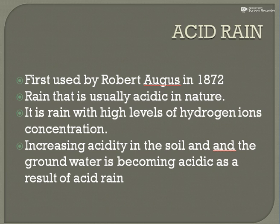However, due to the presence of carbon dioxide in the atmosphere, the rainwater obtained on the earth is slightly acidic with a pH of 5.5 to 5.7, and this is all because of carbonic acid that is formed in the atmosphere. Increasing acidity in the soil and groundwater is becoming acidic as a result of acid rain.